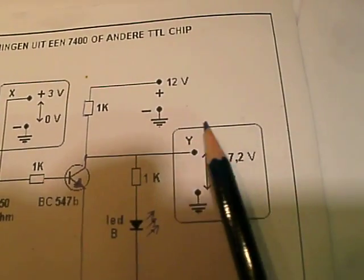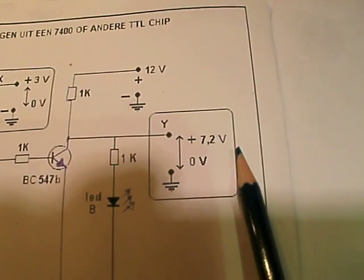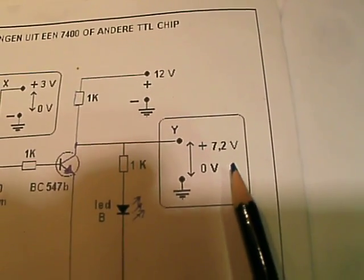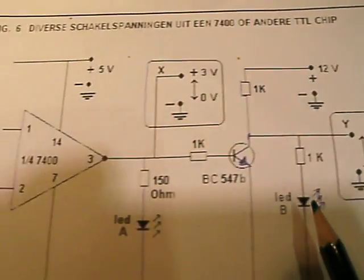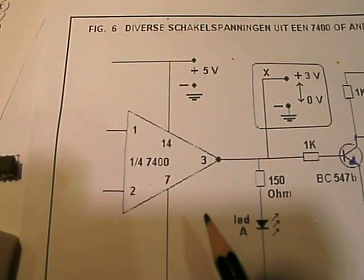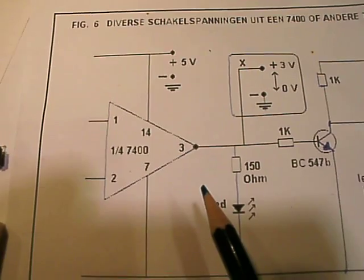So this is a quite usable voltage to drive a Darlington with a relay or so. And that means that you can use such a chip for logic purposes.